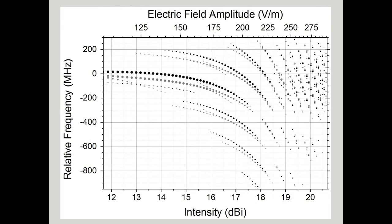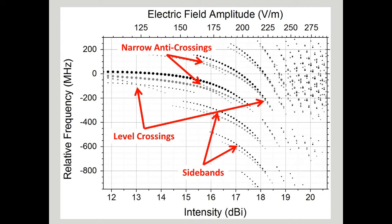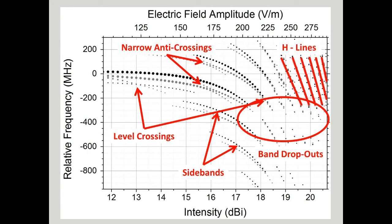Spectral features of interest include the emergence of sidebands, level crossings, narrow anti-crossings, band dropouts, and hydrogenic lines. Using this method, we are able to measure strong fields of about 300 volts per meter to within 0.35 percent.